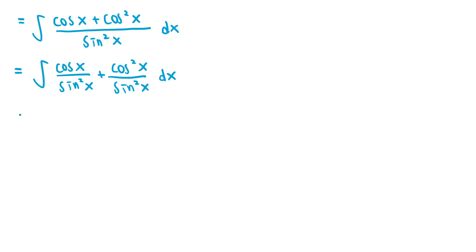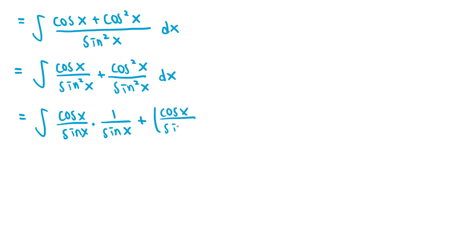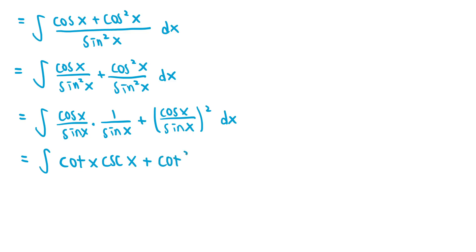For the first fraction, we can express it as cosine x over sine of x times 1 over sine of x. And for the second fraction, we can express it as cosine of x over sine of x, all squared. Cosine of x over sine of x is the definition of cotangent of x, and 1 over sine of x is cosecant of x, so the entire first term is cotangent of x times cosecant of x. For the second term, cosine of x over sine of x is cotangent of x once more, so this is just cotangent squared of x.